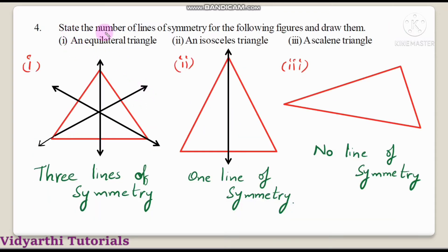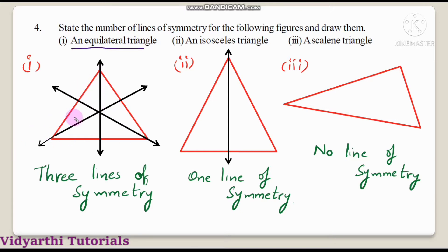Question number 4: state the number of lines of symmetry for the following figures and draw them. Figures include equilateral triangle, isosceles triangle, and scalene triangle. First, equilateral triangle — all three sides are equal. If we draw lines of symmetry, we get three lines, each dividing the triangle into two equal halves. Total N equals three lines of symmetry. So for an equilateral triangle, the number of lines of symmetry is three.